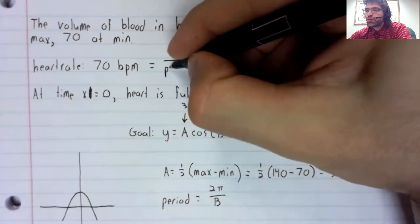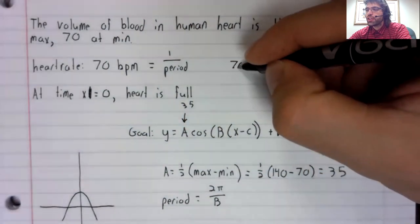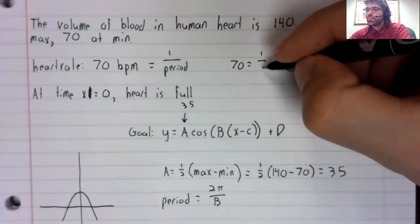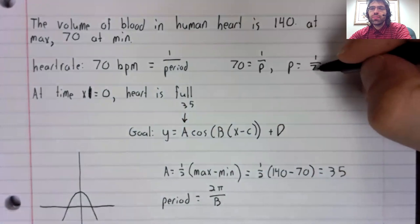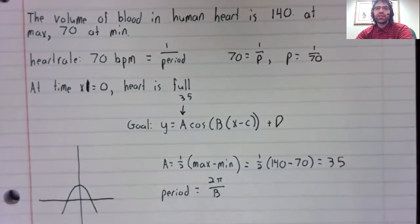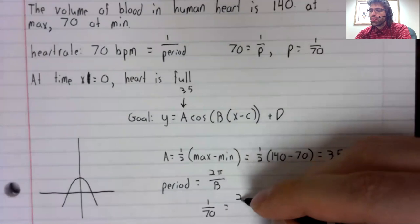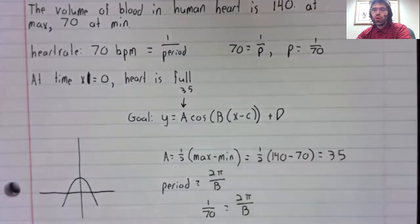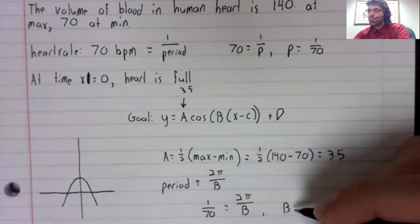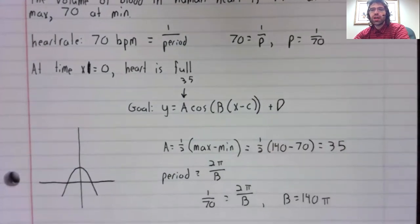And the frequency is one divided by the period. So we can solve for the period. And once we know what the period is, we can use this equality to solve for B.